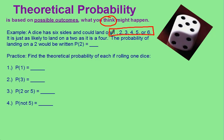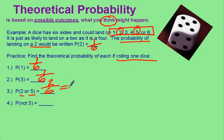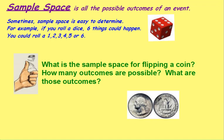It is just as likely to land on a 2 as a 4. So we say the probability of landing on a 2 would be written 1 out of 6. The theoretical probability of rolling a 1 would be 1 out of 6. The probability of rolling a 3 would be 1 out of 6. What about the probability of rolling a 2 or a 5? That would be 2 out of 6, and remember to reduce, 1 out of 3. The probability of not a 5 would be 5 out of 6.